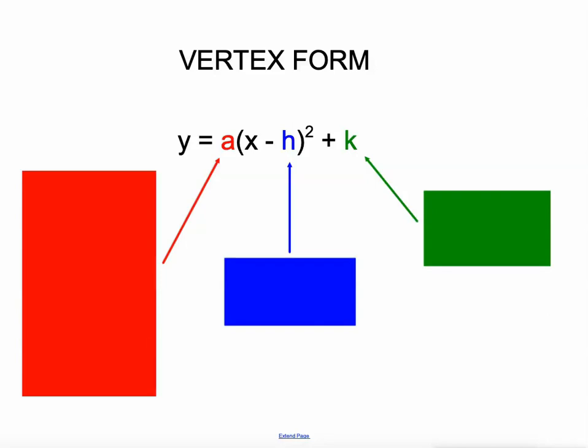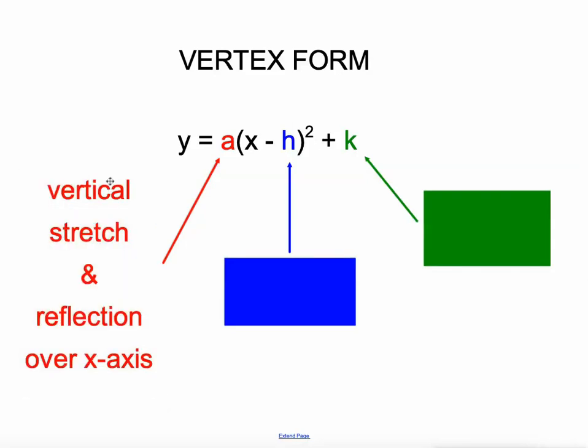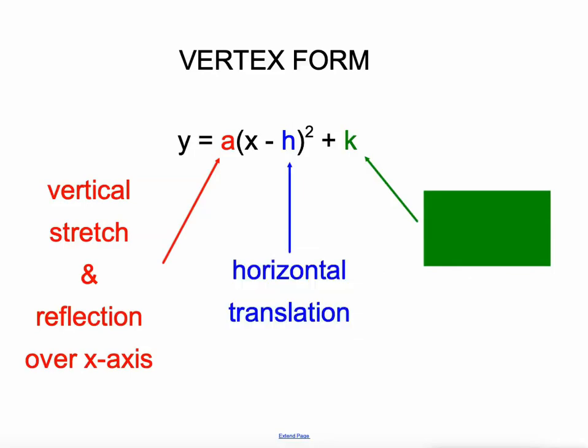A quick reminder from my last video: in this section, a vertex form of a quadratic equation looks like that. The a value controls vertical stretching and shrinking, and reflections over the x-axis. That h value controls horizontal translations, and that k value tells us about vertical translations.